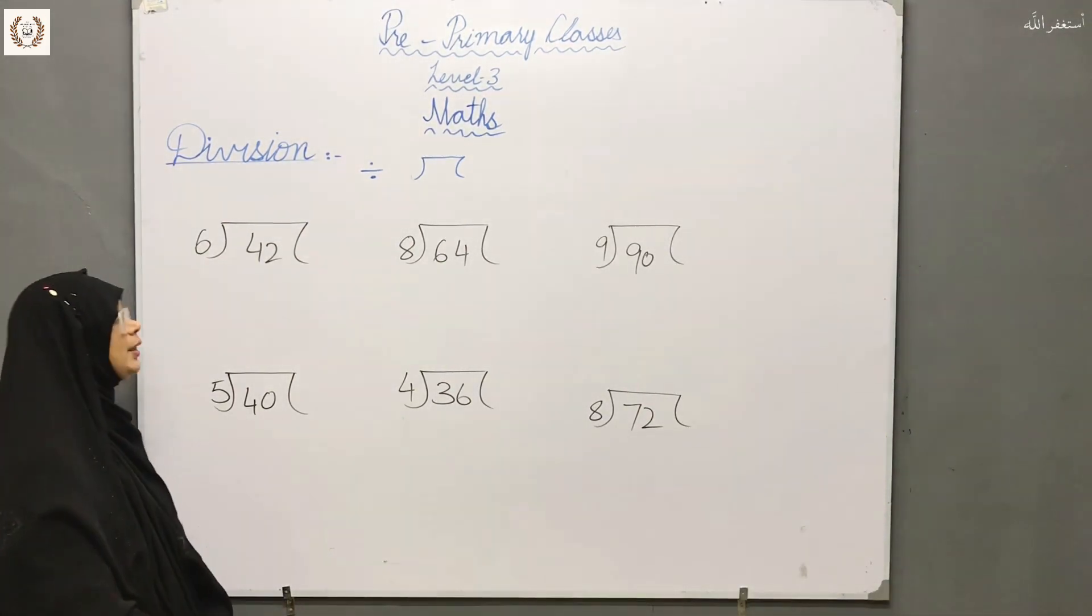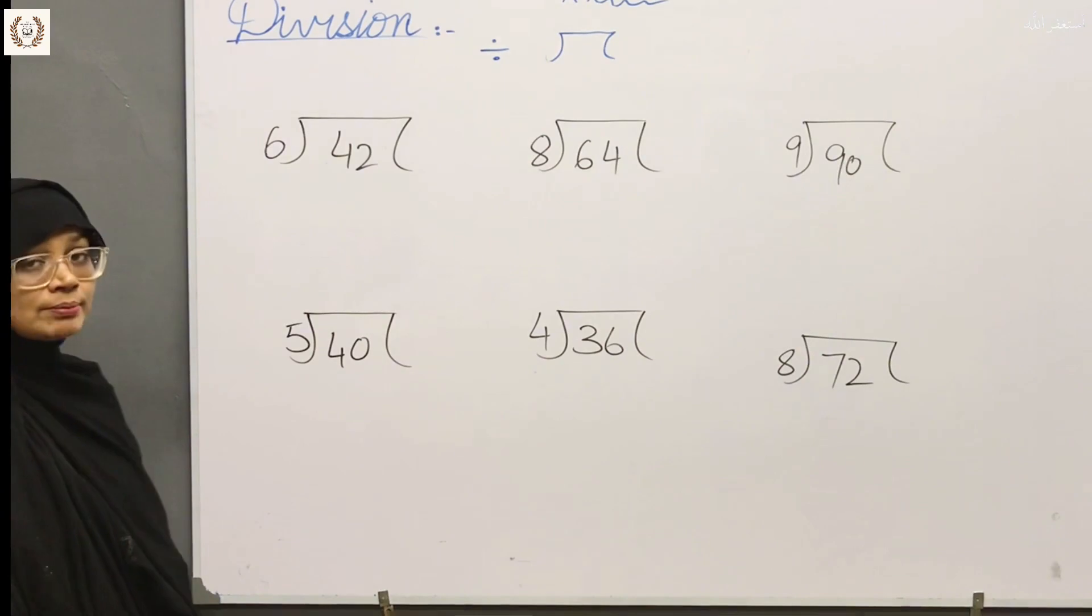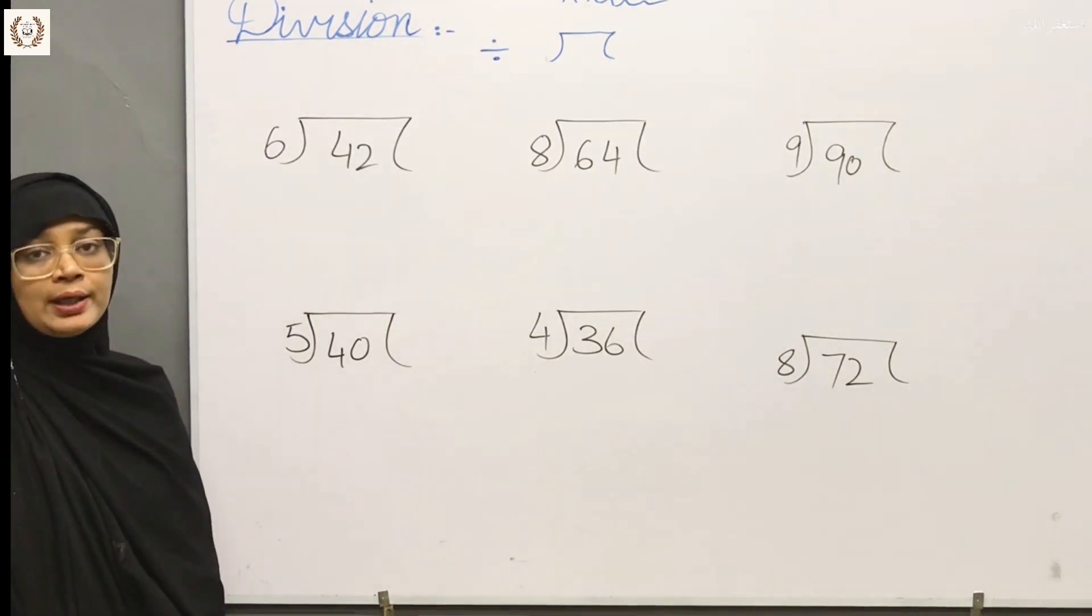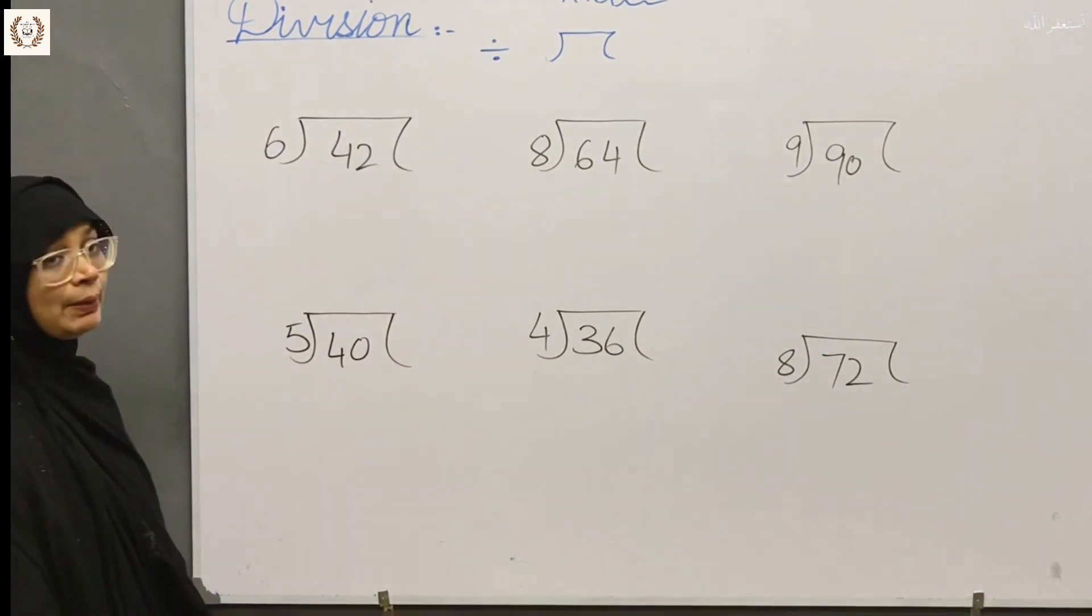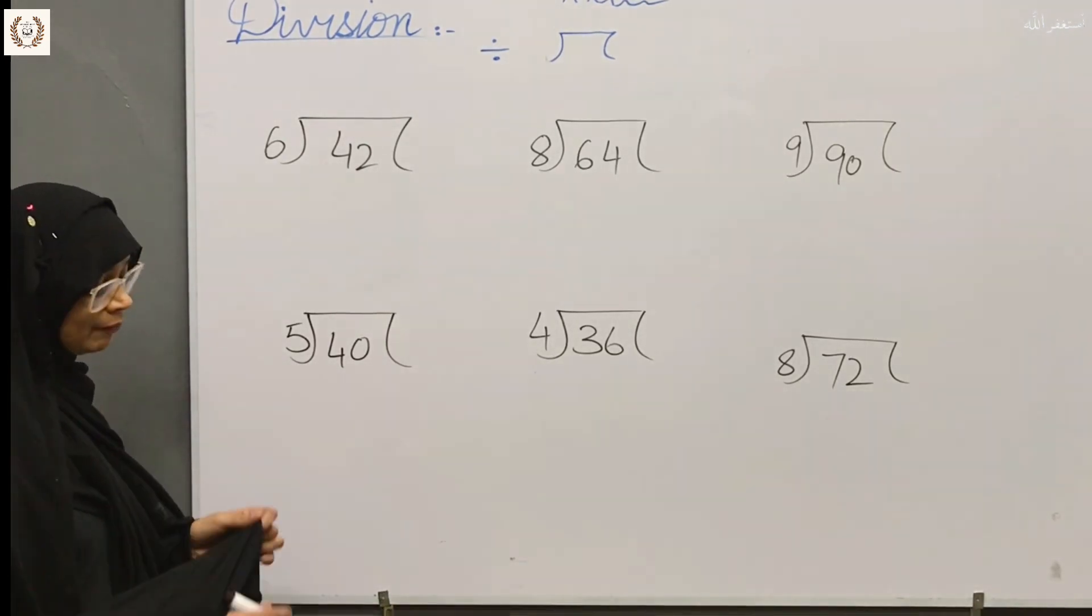So today we are going to do some new sums. Let's see, what is the first sum? What is 6 and 42? It means that we have to apply 6 table to 42.